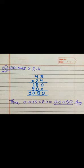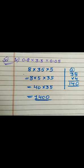Next is 0.8 into 3.5 into 0.05. As you are seeing, we have 3 decimal numbers here, but the rule is the same. First we will multiply the numbers without decimal: 8 into 35 into 5. As we know, 8 fives are 40, and 40 into 35 gives us 1,400.